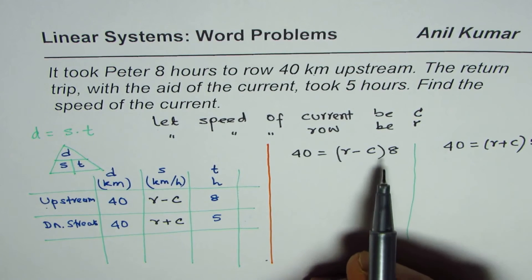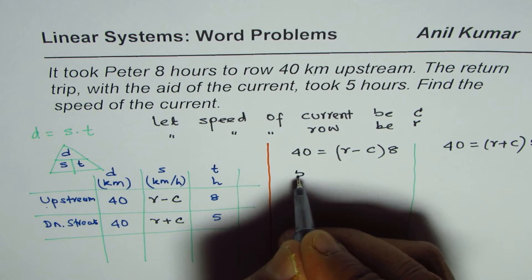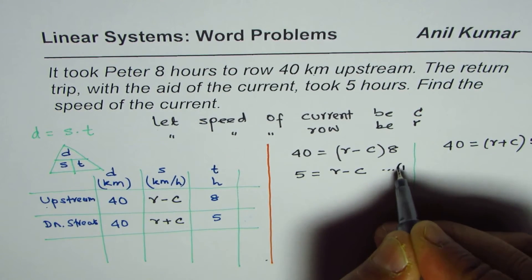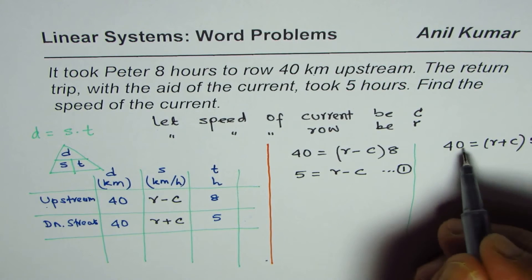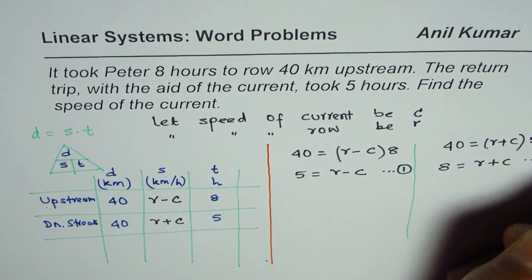Let us simplify. Divide 40 by 8, so we get 5 here. 5 equals r minus c - I'll call this equation 1. Divide 40 by 5, so get 8 equals r plus c - I'll call this equation 2.